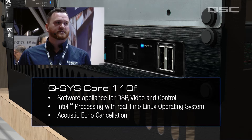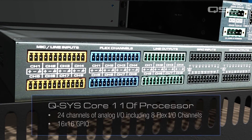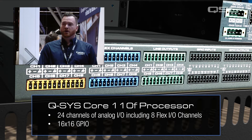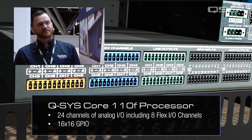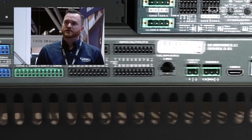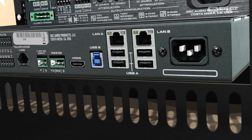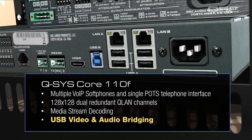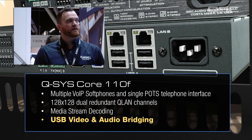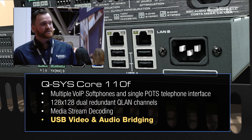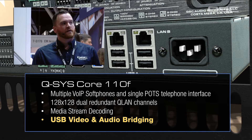It is built on Intel processing with a real-time Linux operating system that we write from scratch. It's got all the audio processing you want, including acoustic echo cancellation. If we take a look at the backside, it's got a class-leading 24 I/O — eight inputs, eight outputs, and in the middle in the blue are eight flex channels, which in software you can define to be either an input or an output. It's got 16 channels of GPIO, a USB-B connector to plug into your computer for AV to USB bridging, multiple VoIP soft phone instances — a single core can run four separate instances of a soft phone or VoIP telephony, as well as plain old telephone system (POTS) for analog retrofit installations, the ability to decode media streams, as well as 128 by 128 Q-LAN channels.